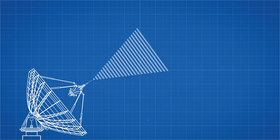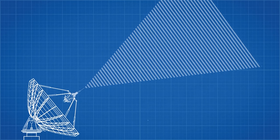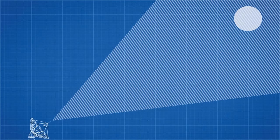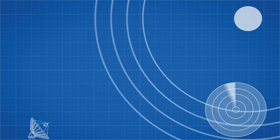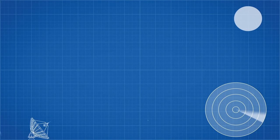Radar works by sending short pulses of electromagnetic energy in the form of radio waves outwards. The antenna then switches to receiver mode and waits to detect the reflections of these radio waves off distant objects. The radar receives a blip on the screen called a radar cross-section, and its size changes with the magnitude of radio waves returning to the antenna.